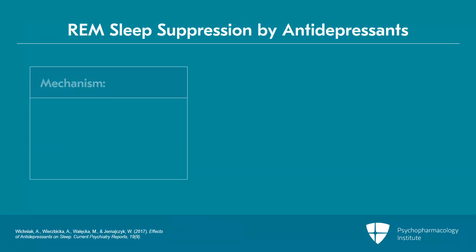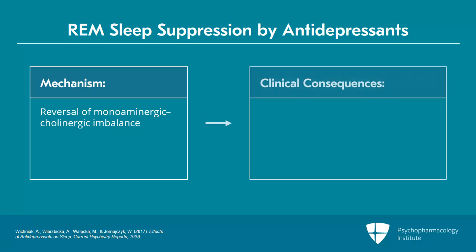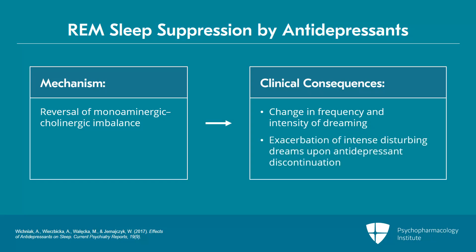The mechanism of REM suppression by antidepressants is believed to be related to the reversal of monoaminergic-cholinergic imbalance, which is characteristic of major depressive disorder. The clinical consequences of REM suppression caused by antidepressants can include a change in the frequency and intensity of dreaming, as well as exacerbation of intense, disturbing dreams related to REM rebound upon antidepressant discontinuation.